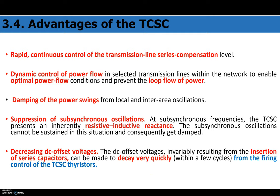Now, what are the advantages of a thyristor control series capacitor? Since it is controlled by thyristor, it gives rapid and continuous control. The continuous control is achieved because a thyristor controlled reactor (TCR) is connected in parallel with the series capacitor. A fixed capacitor alone allows no variation, but TCAC — a combination of a fixed series capacitor with a parallel thyristor controlled reactor — provides continuous control of transmission line series compensation.